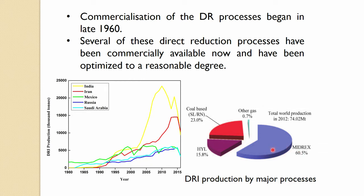The major processes include Midrex, SLRN which is rotary kiln based, and HYL, along with a few others that are not as commercialized. Total production of DRI was 74 million tons in 2012, constituting about 4 to 5 percent of iron production. It is not very high due to those limitations.